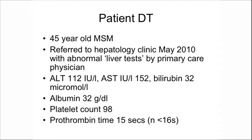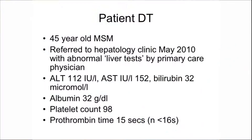Bilirubin was 32 micromoles per litre, upper limit of normal in our laboratory is 17. His albumin was 32 grams per deciliter. The platelet count was 98, times 10 to the power 9 cells per cubic litre. And his prothrombin time was 15 seconds, which was normal.